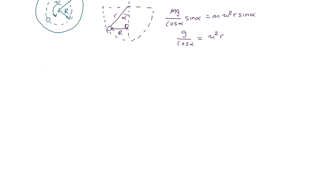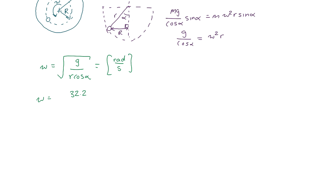Isolating omega: ω = √(g / (r·cos(α))), in units of radians per second. Plugging in the numbers: g = 32.2 ft/s² (U.S. customary units), r = 6 inches = 0.5 ft, and cos(45°). This gives ω = 9.543 radians per second.